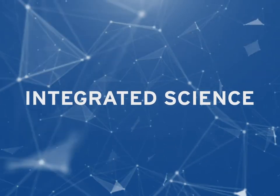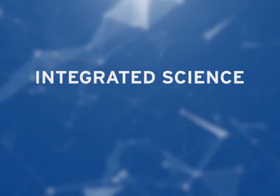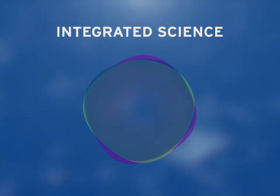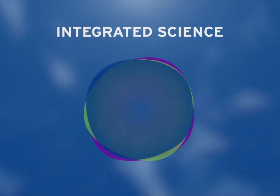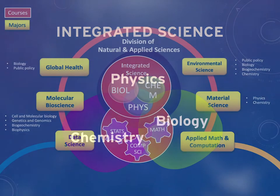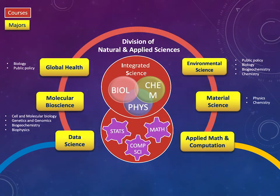Currently, our teaching model has three IS courses on the three key cornerstones of modern science — physics, chemistry, and biology — each transmitting disciplinary knowledge and training scientific skill sets and mindsets rigorously.